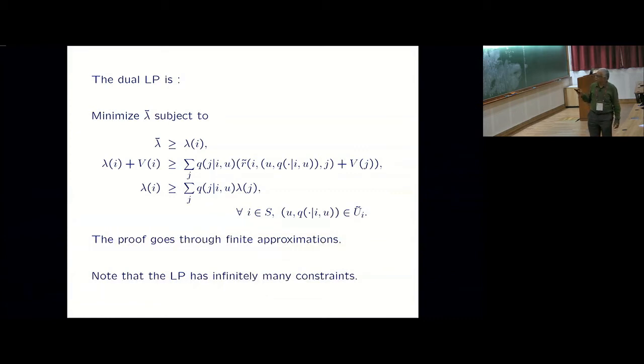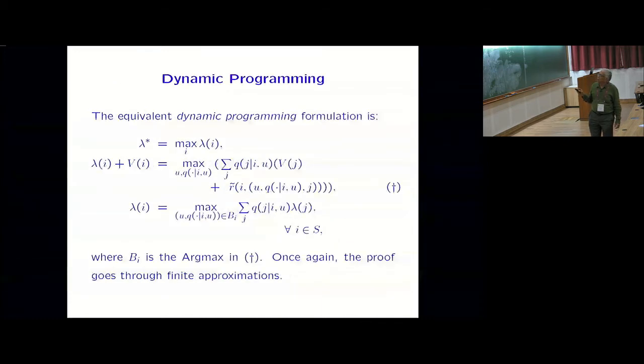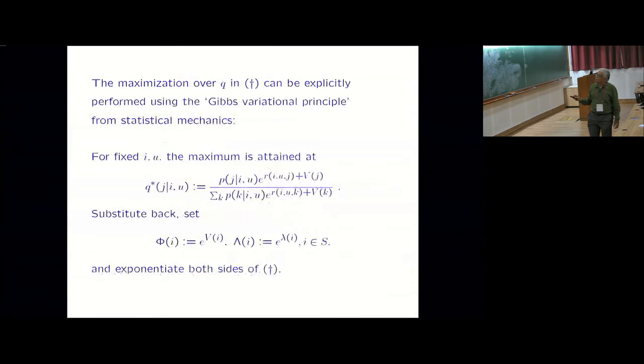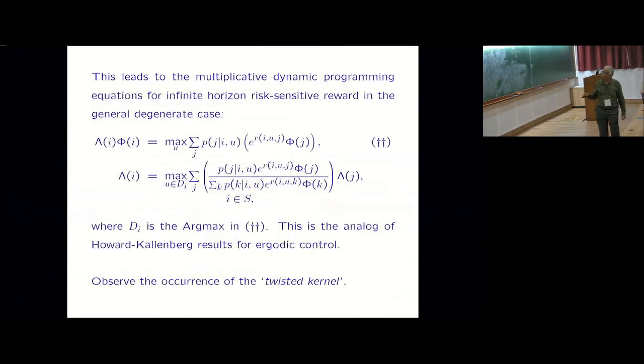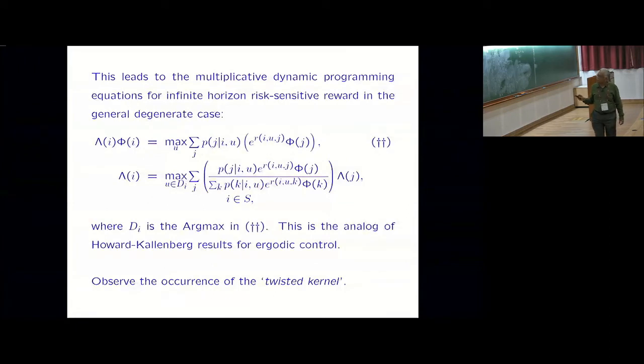I am skipping details because they are just, they are not profound. They are just messy notationally. You can keep simplifying it. Eventually you get an LP that, write the dual LP and that ends up being something nice. This is the counterpart of basically I have converted into an average cost problem and done the LP work kind of. But then the main thing is I go back from this to the dynamic programming equation. You end up getting this.